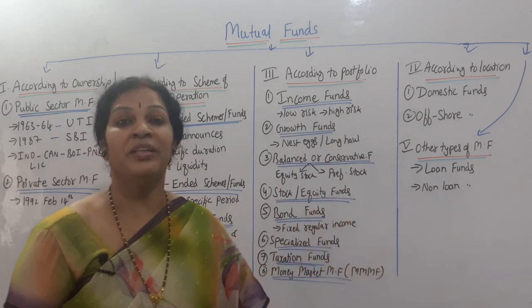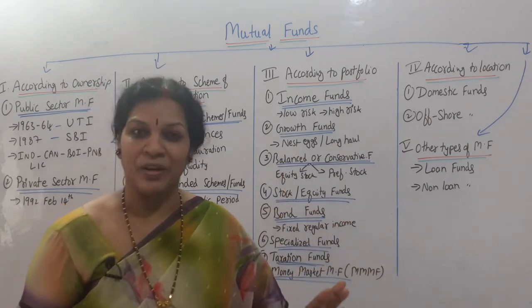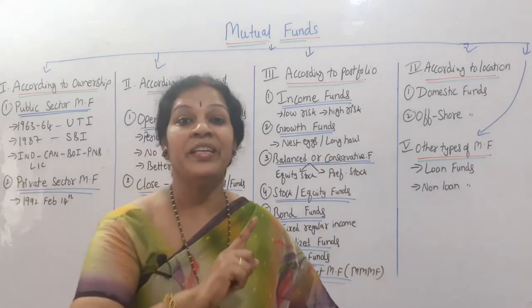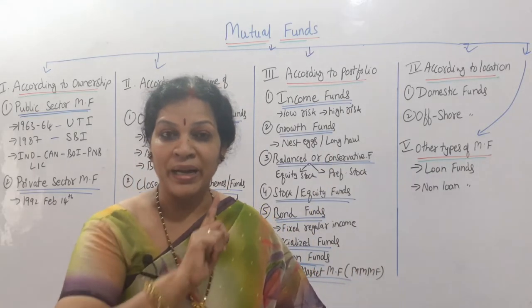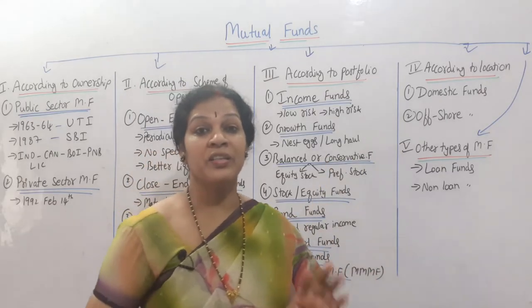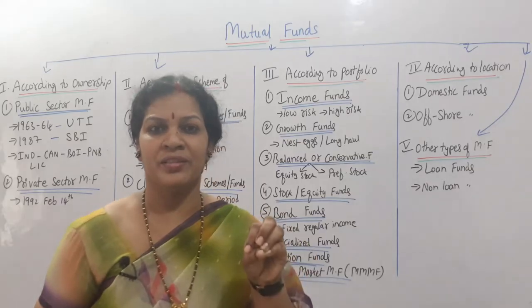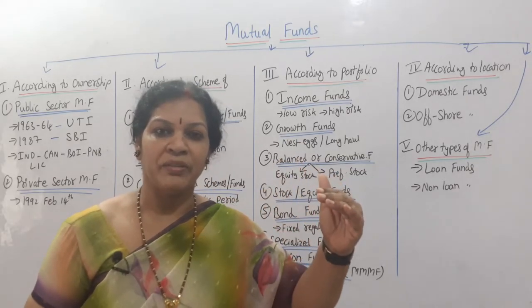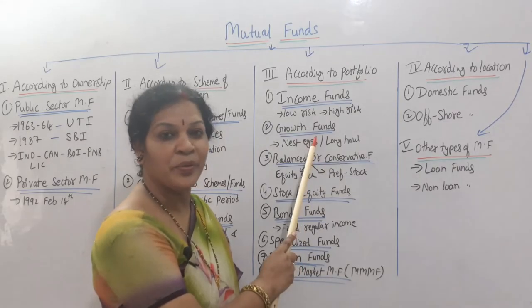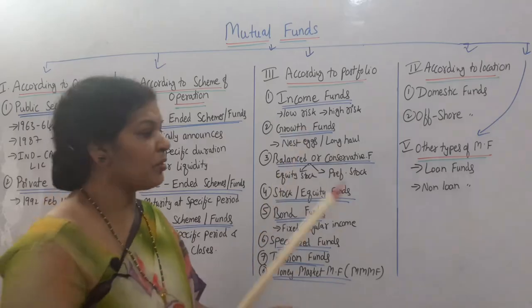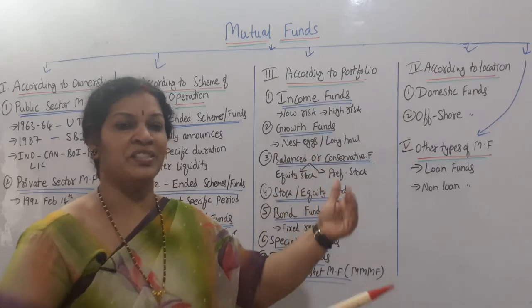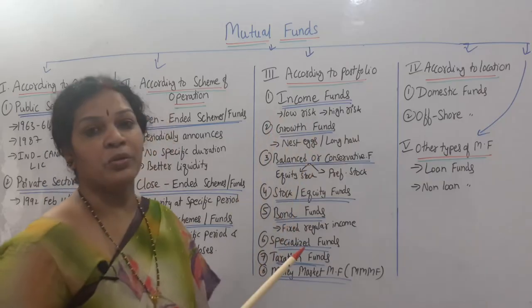The next is growth funds. In growth funds, we do not focus on regular income at all. What matters is growth on the funds. Say I purchased growth funds of five lakh — I am not going to get regular income, but this five lakh is going to increase slowly — it may become five and a half lakh, six lakh, seven lakh. There will be growth on the funds only. We can also call these 'nest egg' or 'long haul' funds.